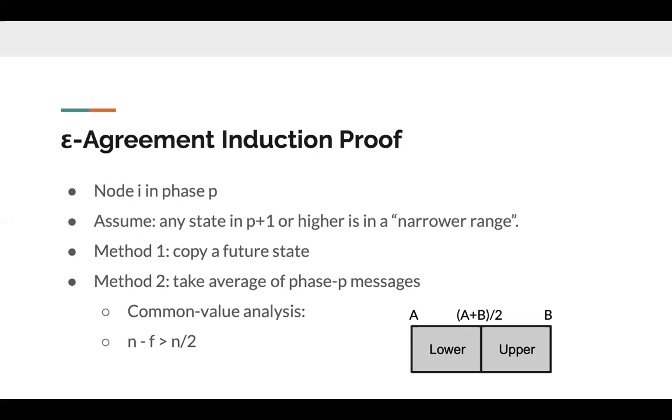Now, let's consider the second method. The second method to proceed to the next phase is taking average of n minus f in phase p messages. We can prove this case with the common value analysis. Under the assumption that n is greater than or equal to 2f plus 1, we can induce that n minus f is greater than n over 2.